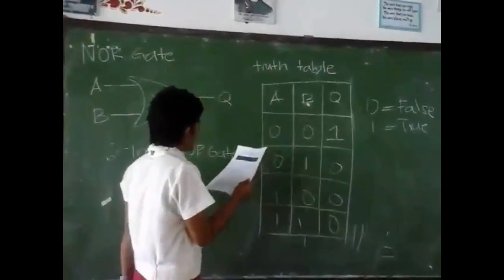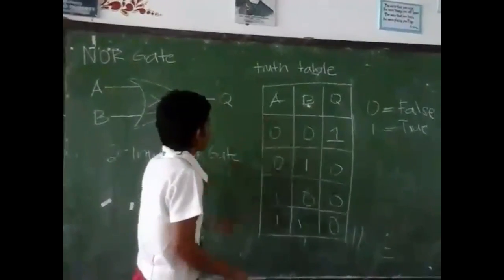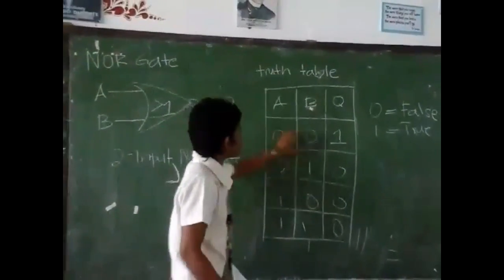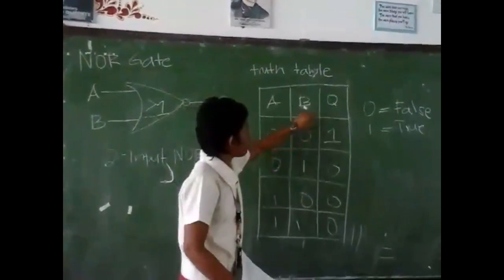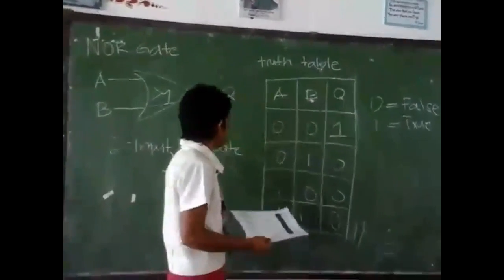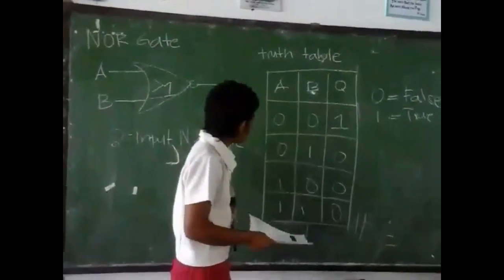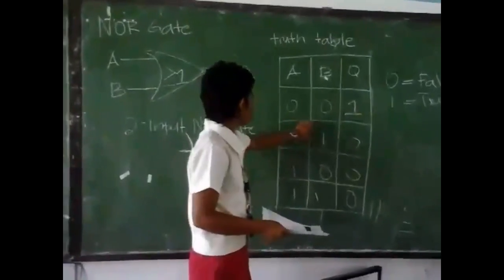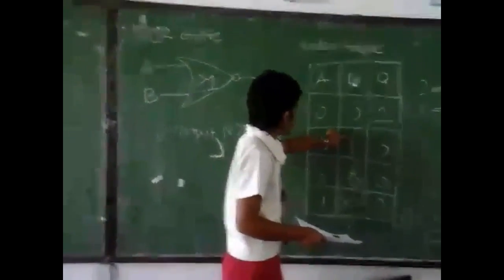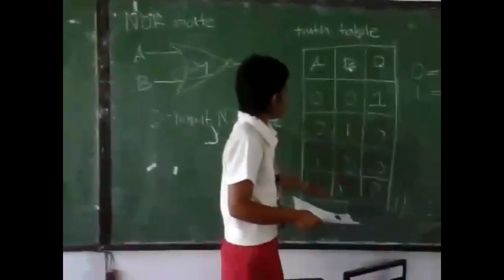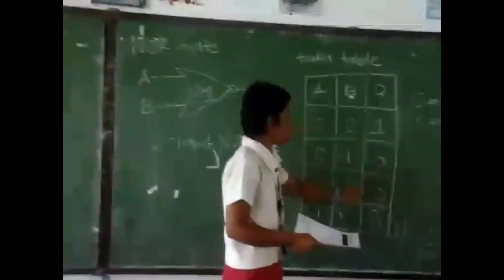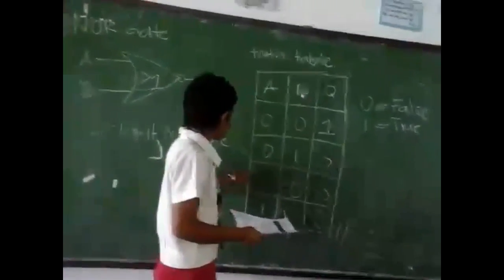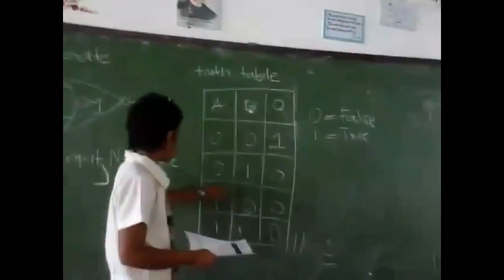If input B equals 0 and input A equals 0. If input A is true. If input A equals 0, if input A equals 0, if input B equals 1, and input A equals 0.